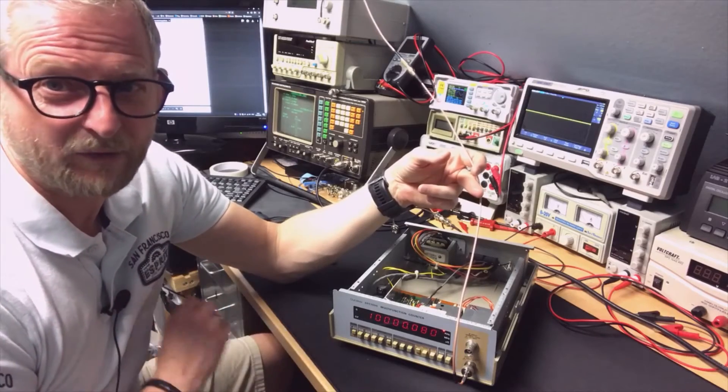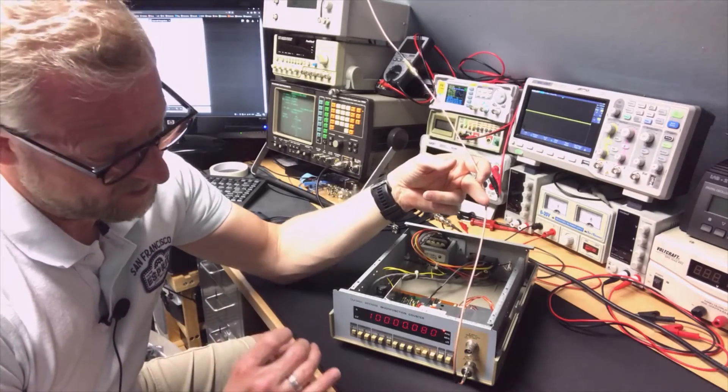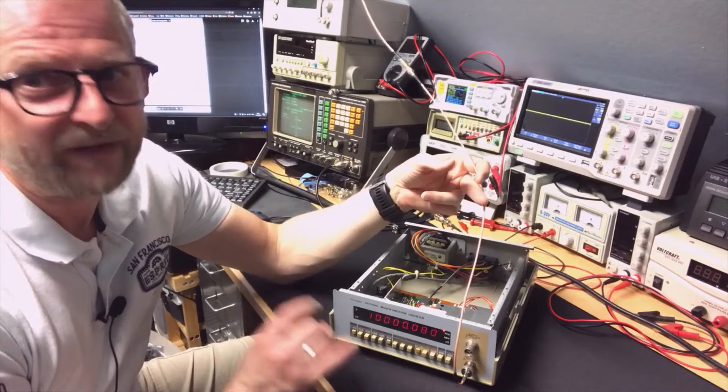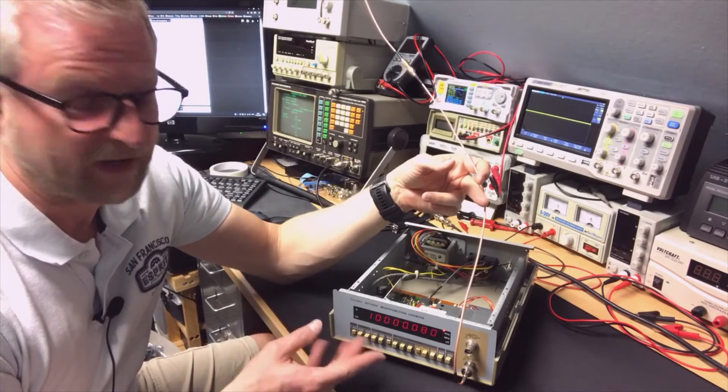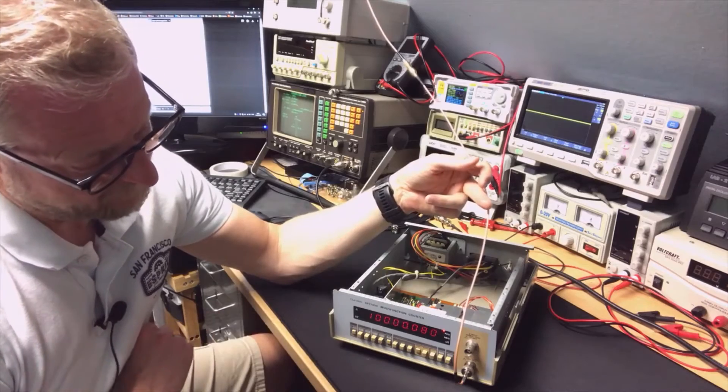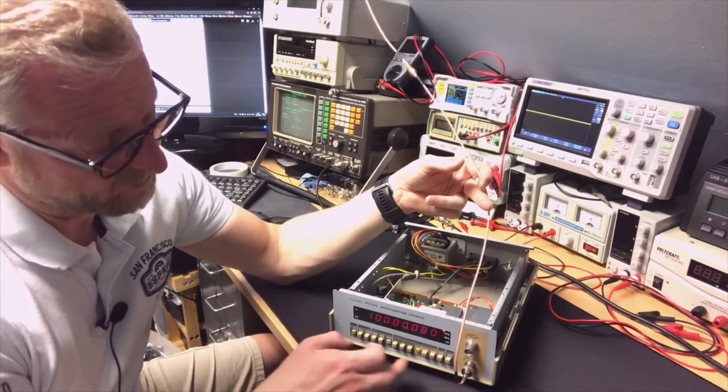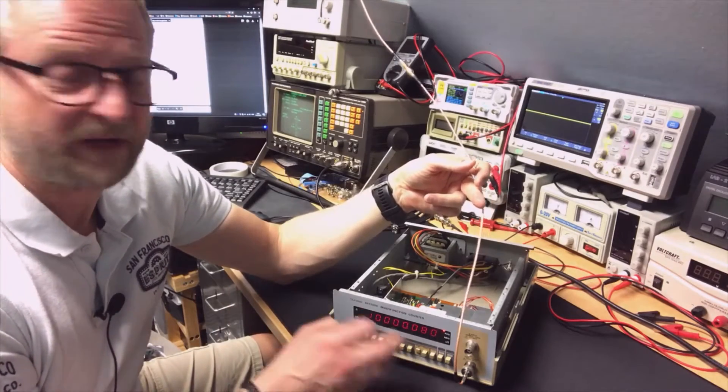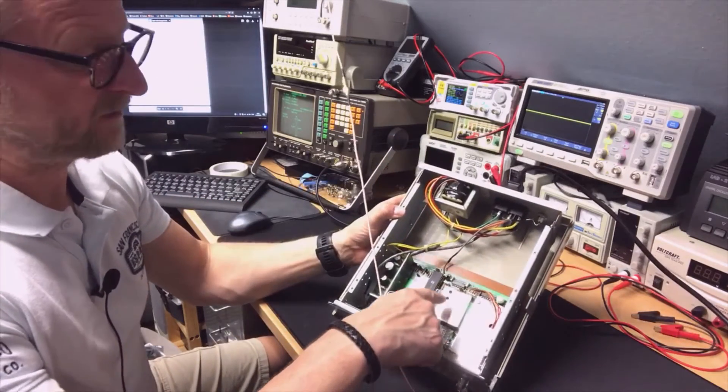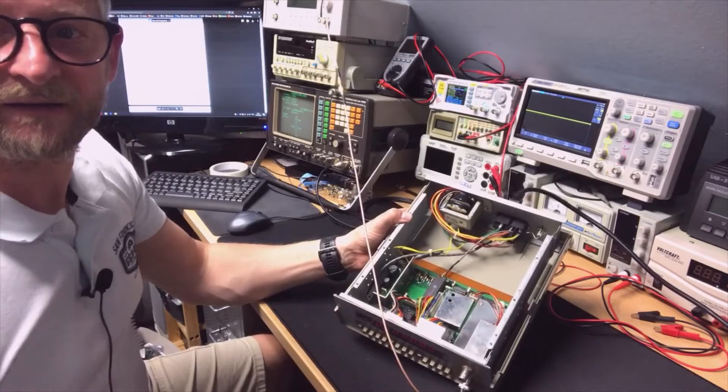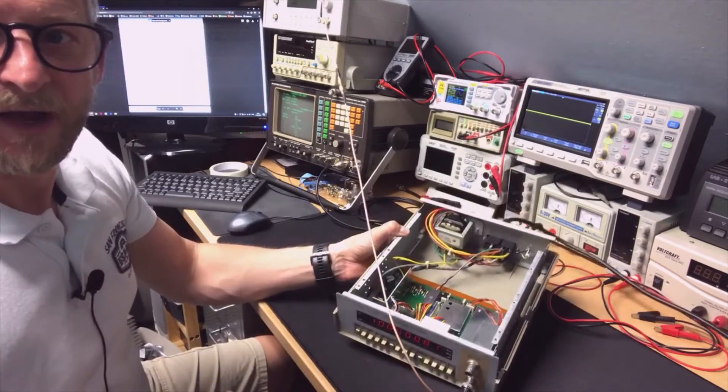Maybe I can make a little modification or just replace the crystal. What we can do is now switch to the B channel. It has a different trimmer. You see here two holes, the first one is for the 10 and the second one is for the higher frequency.